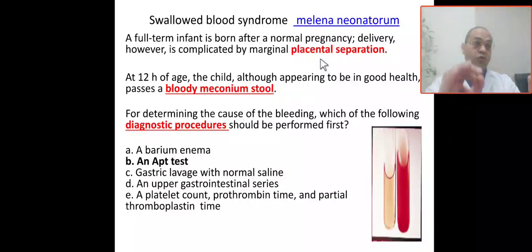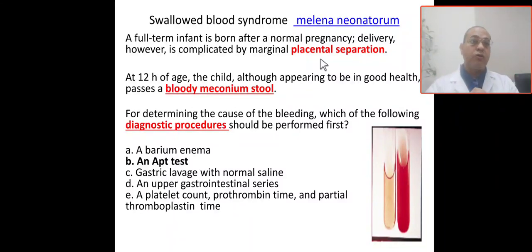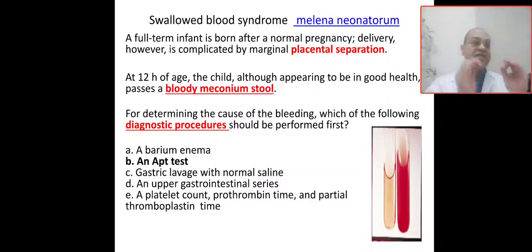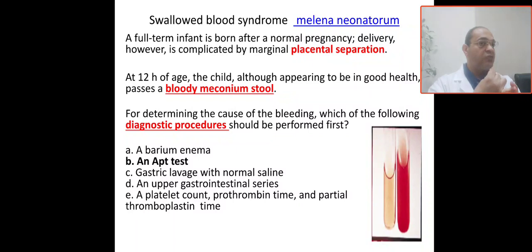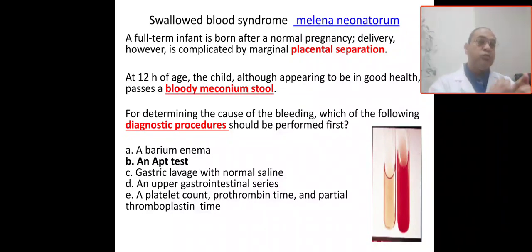The key clue in this scenario is placental separation or placental bleeding. At 12 hours of age, the child, although appearing to be in good healthy condition, passes bloody meconium stool. This is another important clue — placental bleeding at delivery, and then bloody meconium stool at 12 hours of age.